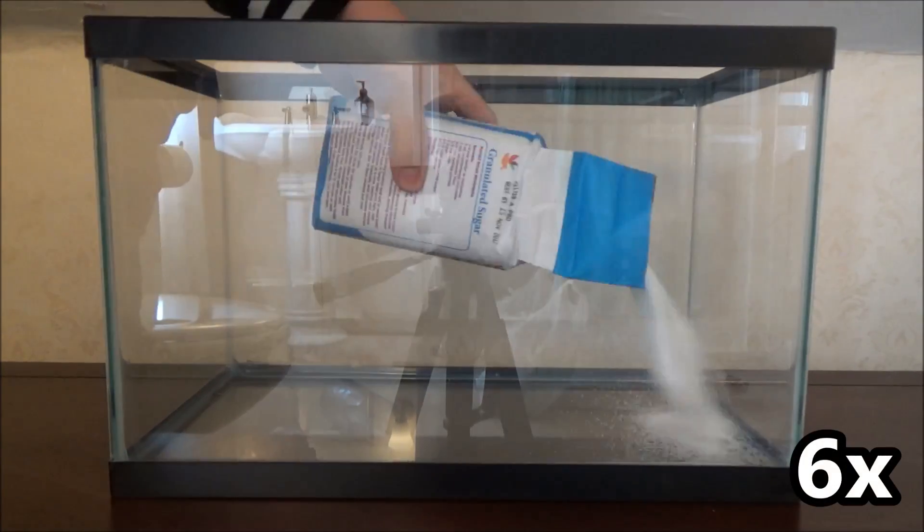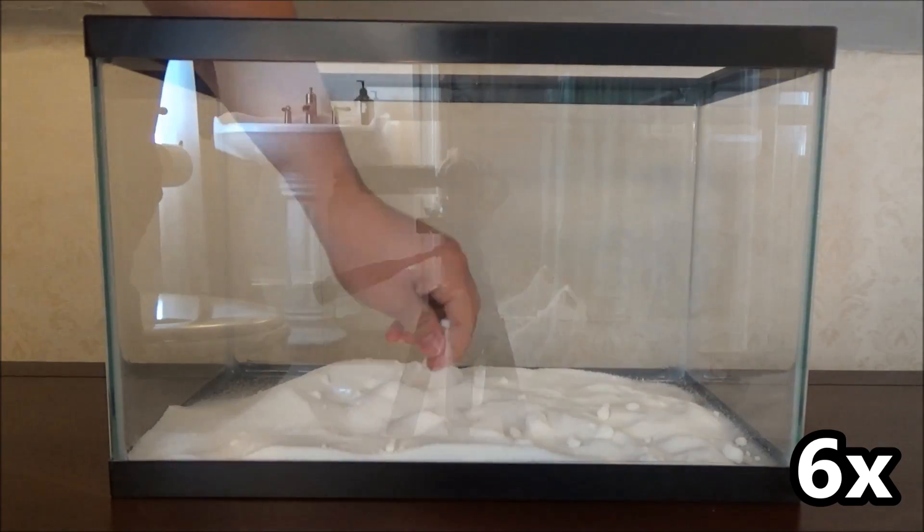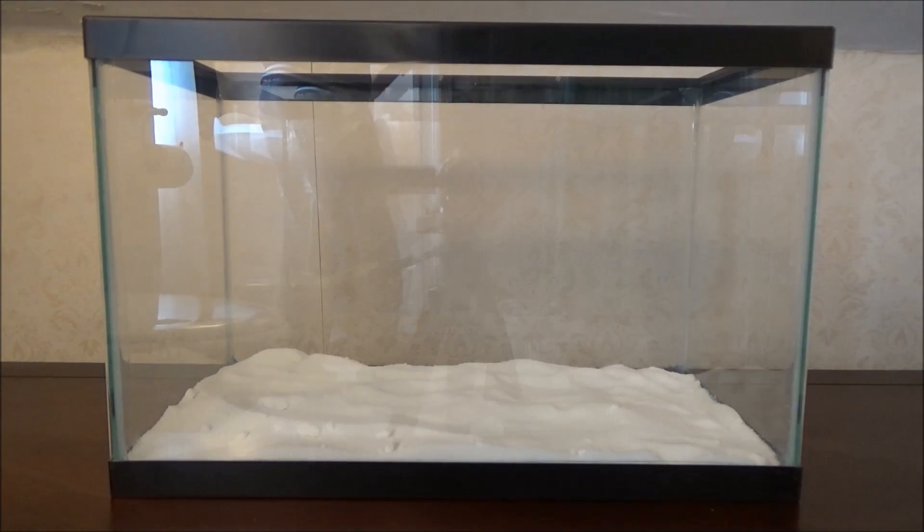What you're going to do is you're going to use the entire two pound bag to fill up the bottom of the fish tank. Break up any big clumps of sugar and try to disperse it evenly so that it's all level. And then you guys are going to put in the five liters of water.